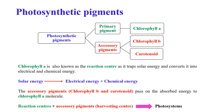Pigments involved in photosynthesis are called photosynthetic pigments. Photosynthetic pigments are of two types: primary pigment and accessory pigment. Primary pigment contains chlorophyll A, whereas accessory pigments consist of chlorophyll B and carotenoid. The primary pigment has the ability to trap solar energy and convert it into electrical energy and chemical energy, and so it is also known as the reaction center.